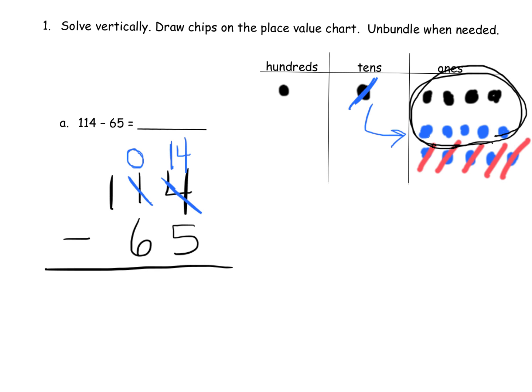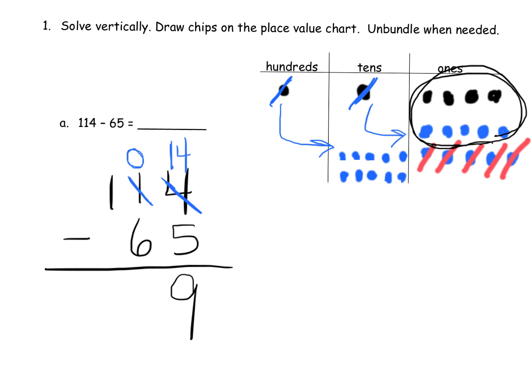That leaves us with nine, so 14 minus five is nine. Now it says we have zero 10s and we need to take away six 10s. Zero 10s take away six — we can't do that, so we're going to unbundle. We're going to unbundle 100 and get 10 tens.